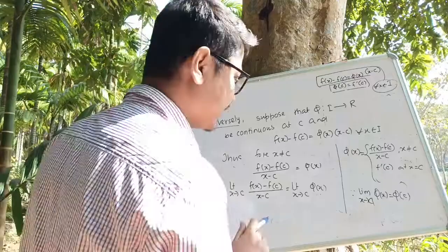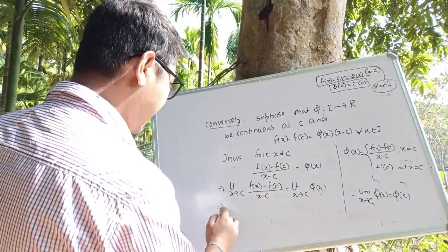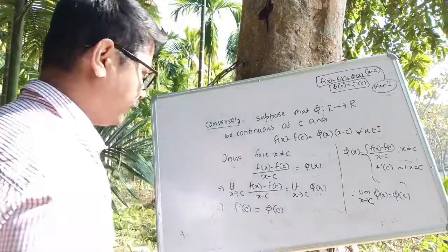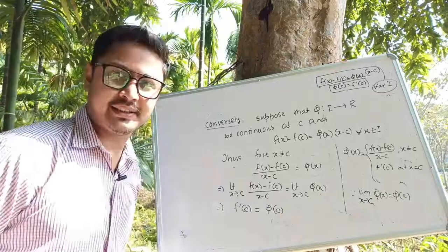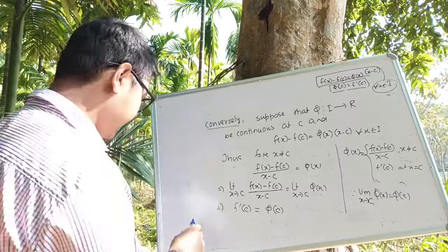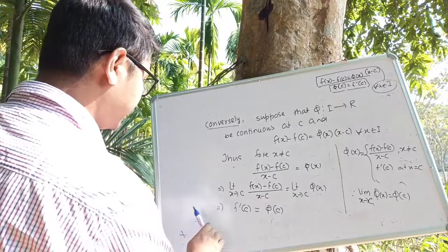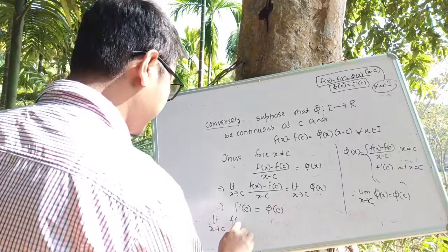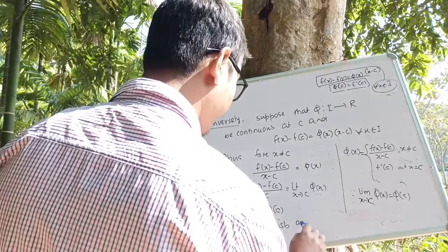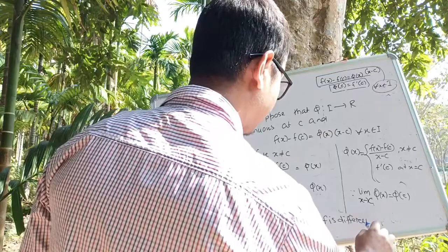Since the function phi(x) is assumed to be continuous at c, the limit as x tends to c of phi(x) equals phi(c). Therefore the limit as x tends to c of [f(x) minus f(c)] divided by (x minus c) exists and equals phi(c), which means f is differentiable at c. The left-hand derivative equals the right-hand derivative, confirming f is differentiable at c.